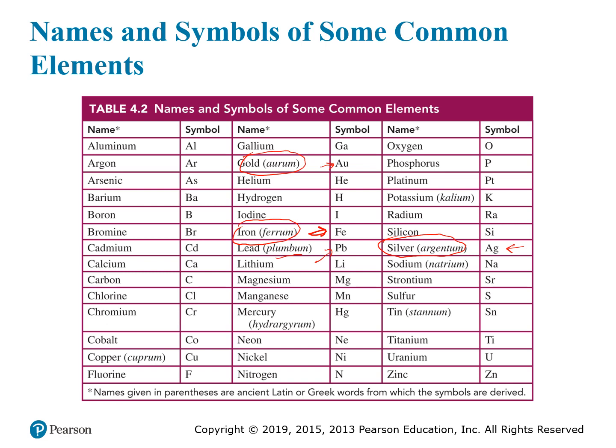Most of the elements have symbols that are pretty easy to remember — they come straight from the name that you're familiar with. But some of these cases are special and you need to be on the lookout for them. You don't need to memorize the entire periodic table, but it will definitely help if you're familiar with some of these cases.